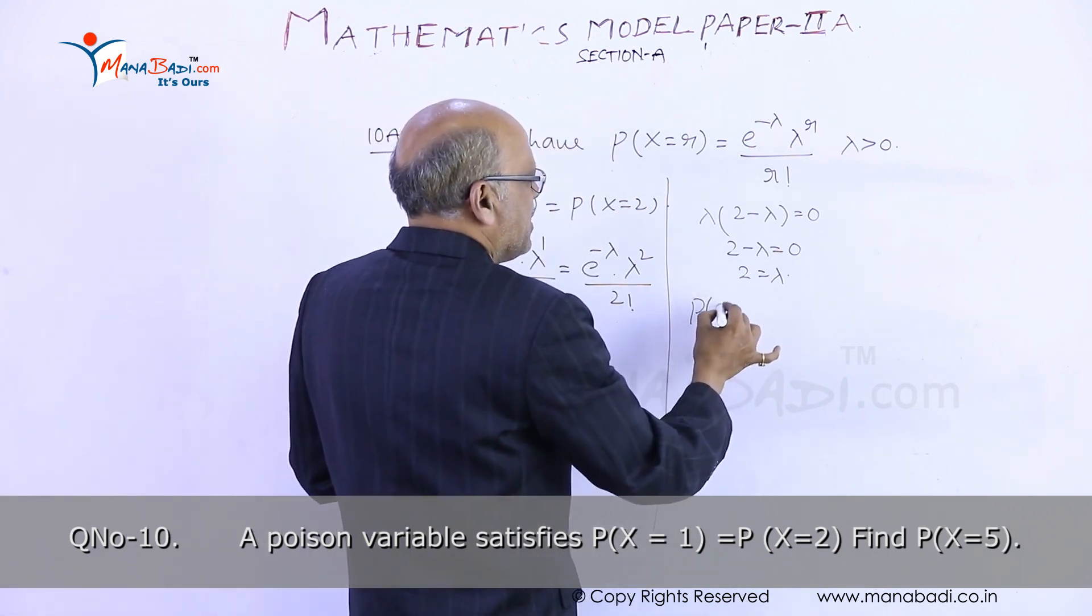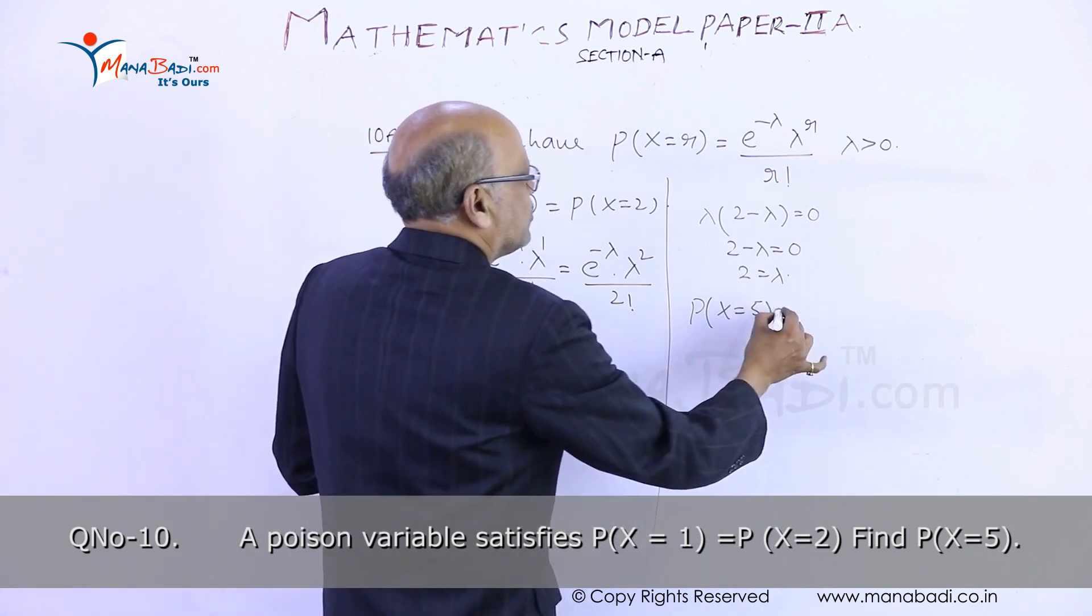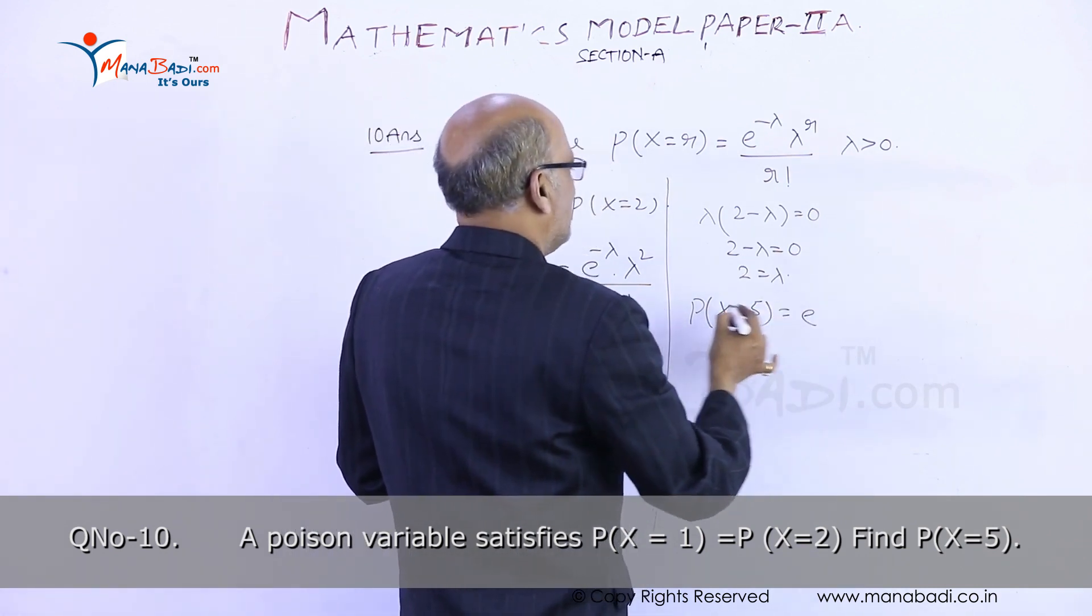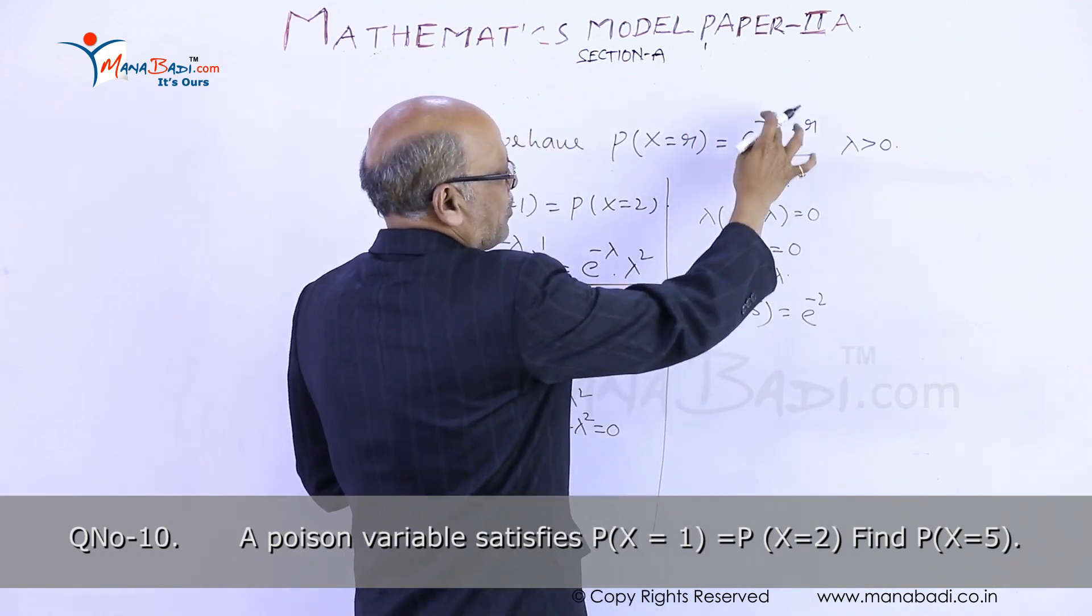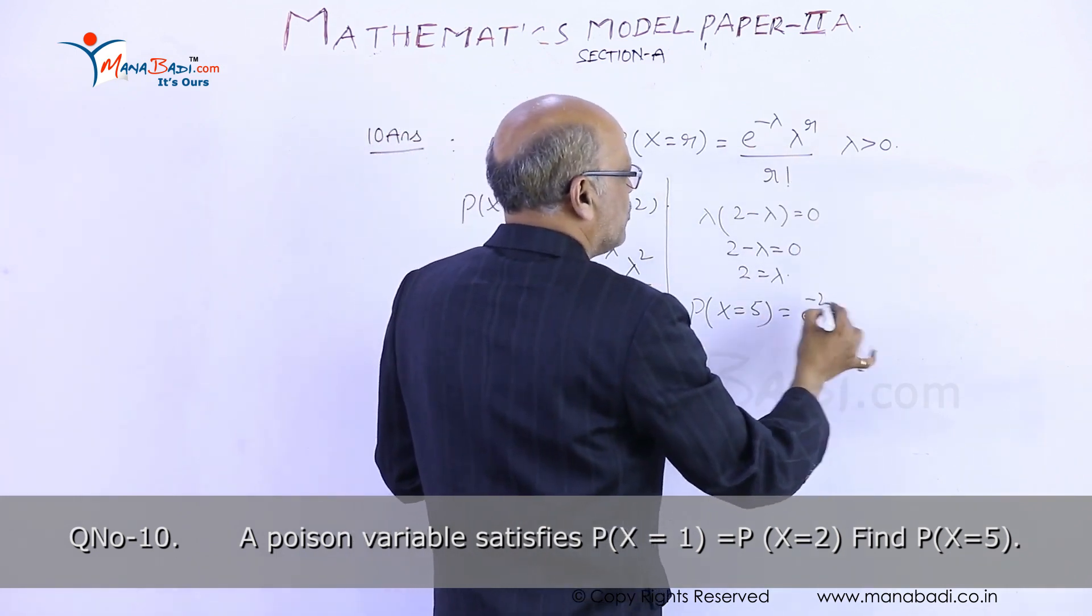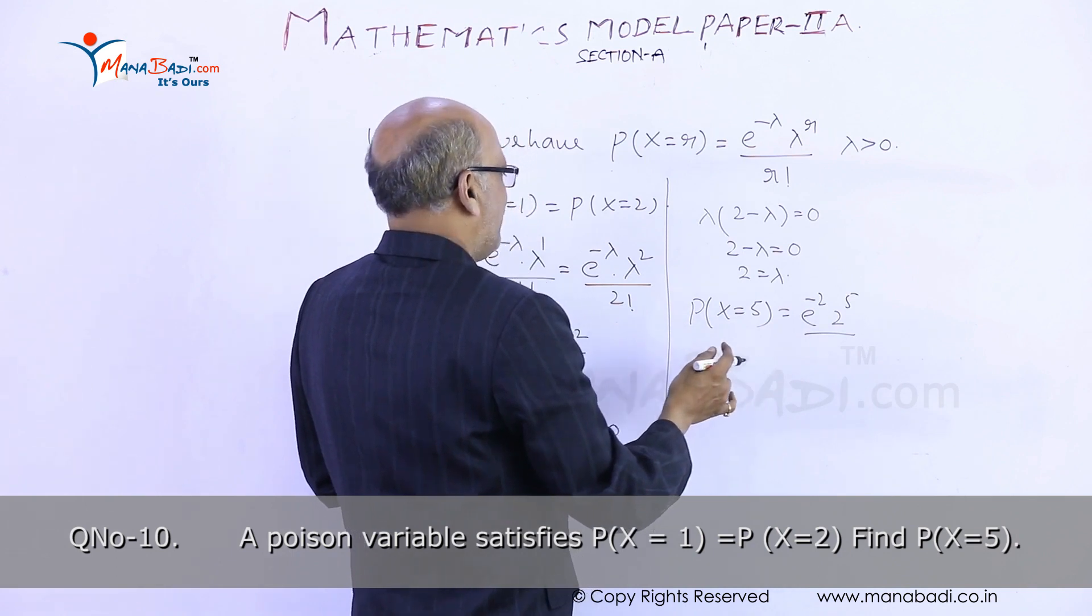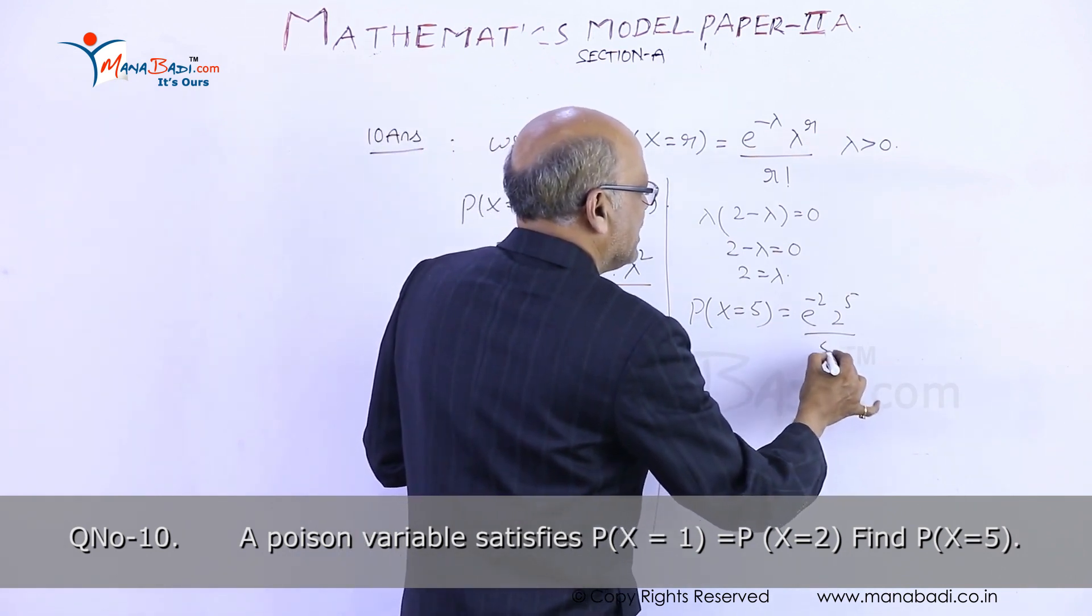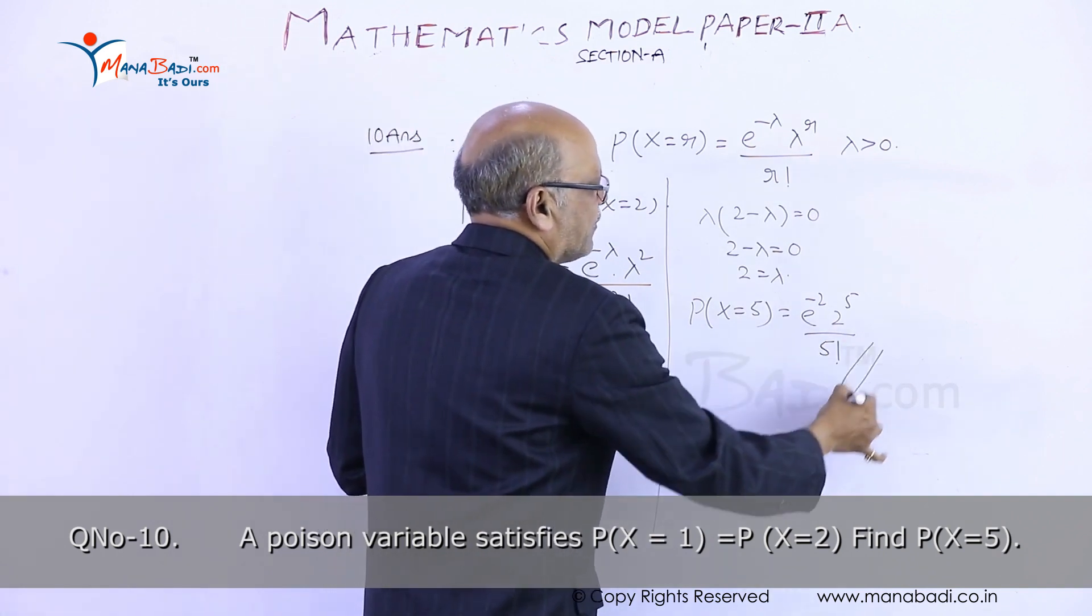Now he is asking the question P(x=5), so that equals e to the power of minus lambda. Lambda value is 2, so e to the power of minus 2, times lambda to the power of 5, which is 2 to the power of 5, divided by r factorial, which is 5 factorial. So this will be the answer for the 10th question.